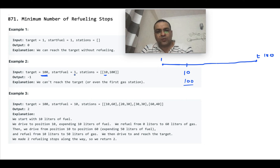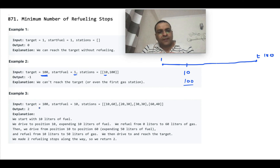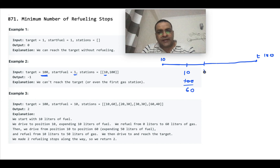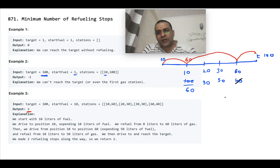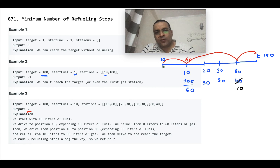Now consider this: you have a starting fuel of 10 kilometers. At 10 kilometers you have a station with 60 liters of fuel, at 20 kilometers a station with 30 liters, and at 30 kilometers a station with only 10 liters. So you will go from the starting point to the first station, stop there and take 30 fuel, then stop at the next station and take 10 fuel, and then reach the target.